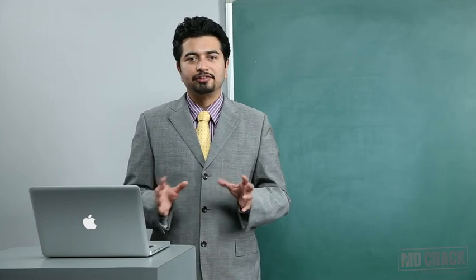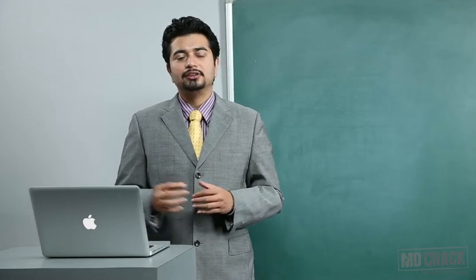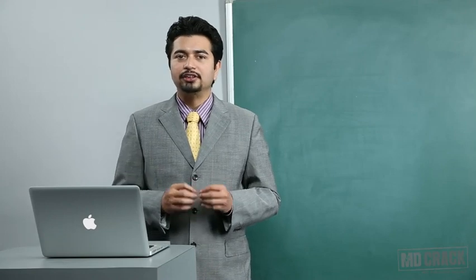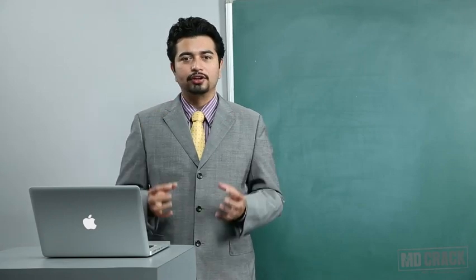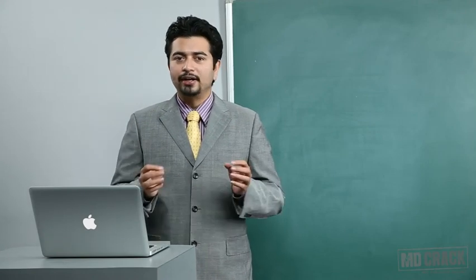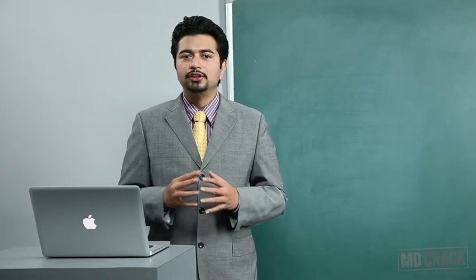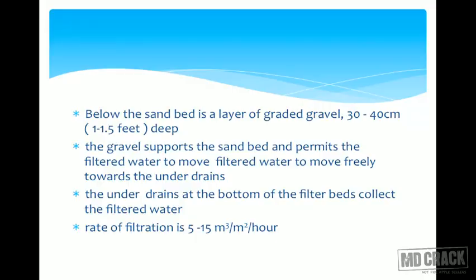One notable difference is the size of the sand. The size of the sand in the rapid sand filter is larger so that water flows more freely, whereas in the slow sand filter it was much smaller and therefore water flowed much more slowly. The rate of filtration in the rapid sand filter is very fast — 5 to 15 cubic meters per square meter per hour — much faster than the slow sand filter.